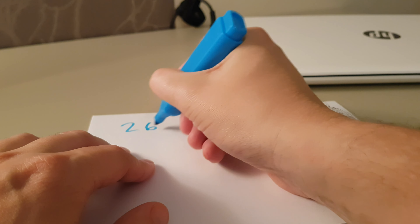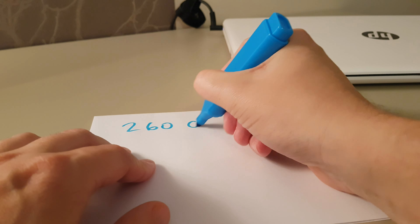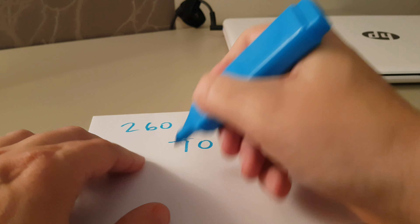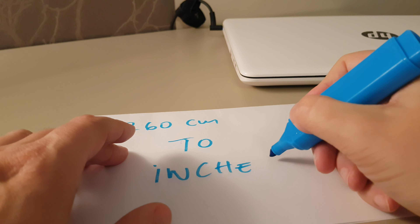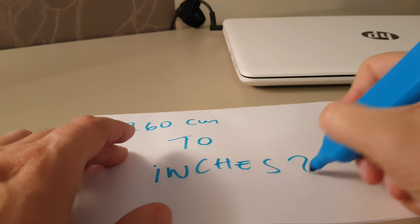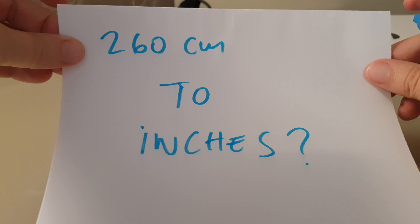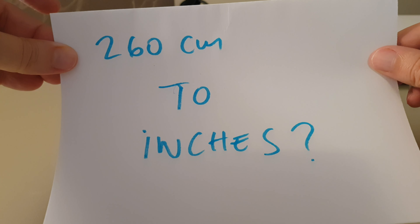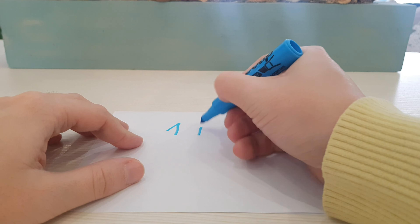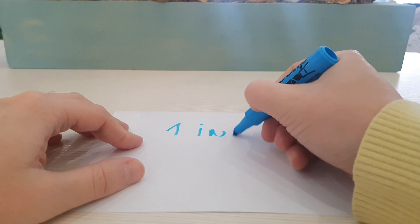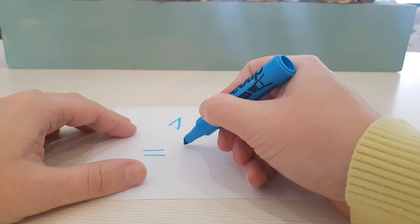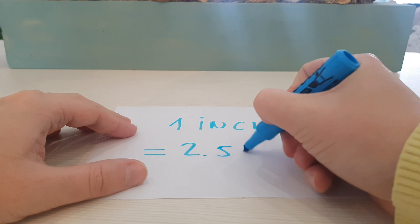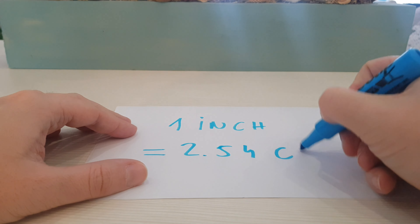In this video I will show you how to convert 260 centimeters to inches. Here is the formula: one inch equals 2.54 centimeters.